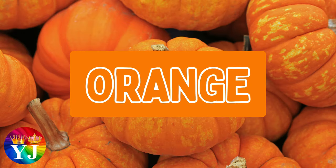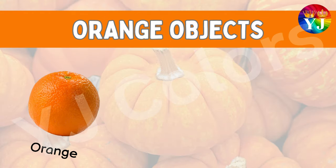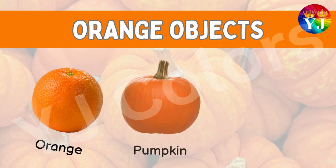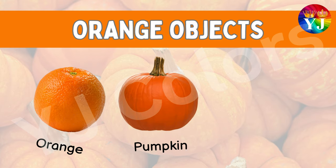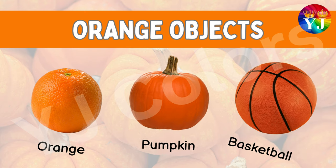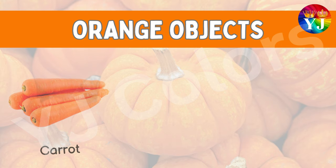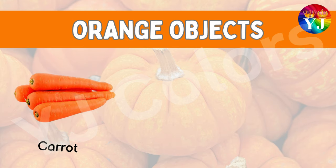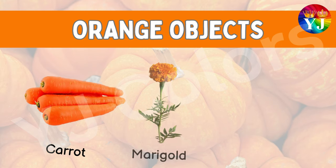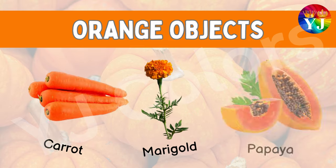Orange. Examples of orange: Orange, Pumpkin, Basketball, Carrot, Marigold, Papaya.